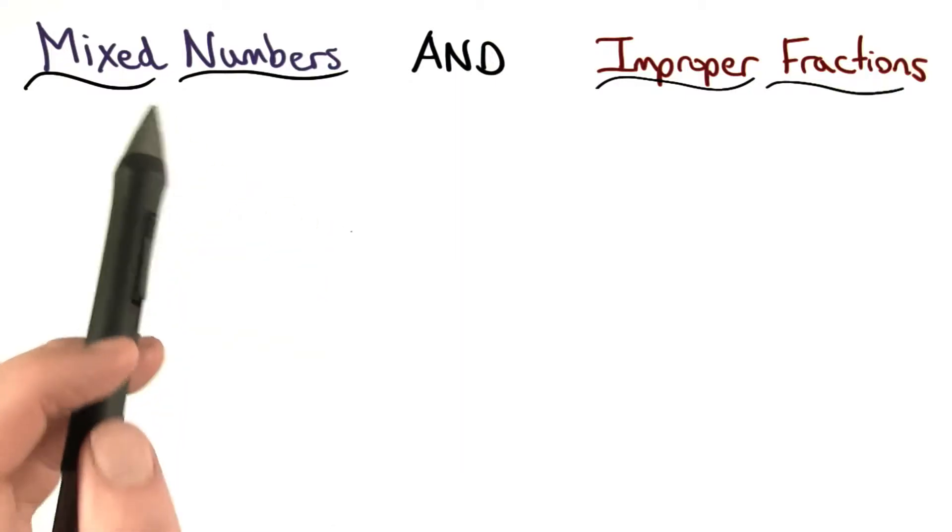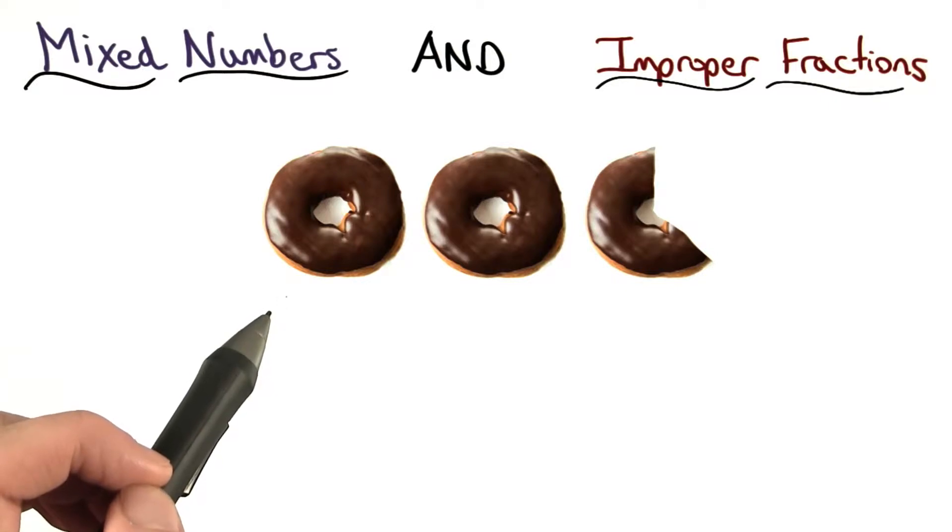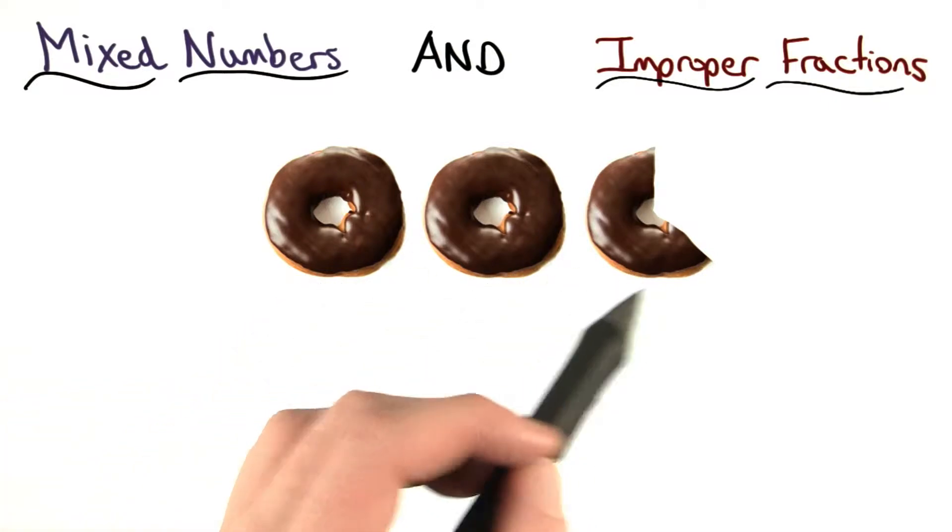Before we attempt our problem, let's review mixed numbers and improper fractions. Mixed numbers are a way to count objects when we have a couple of objects and a part of that object.